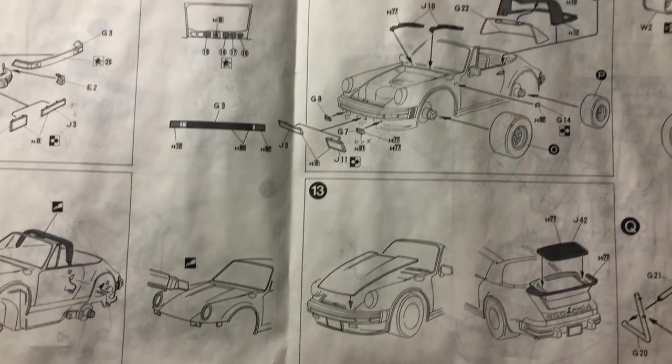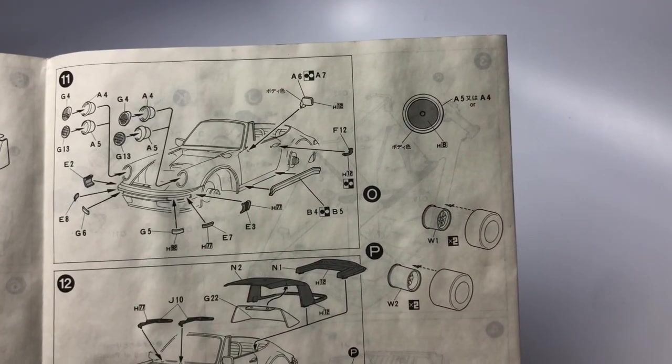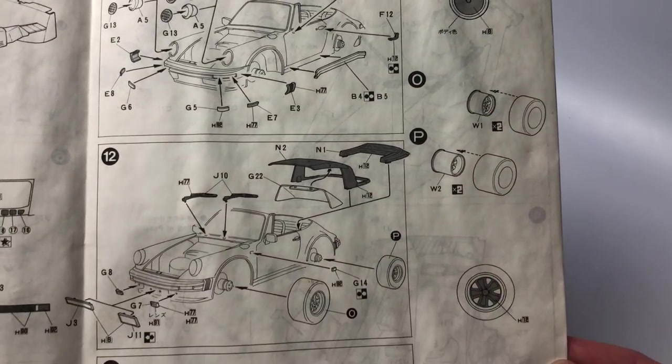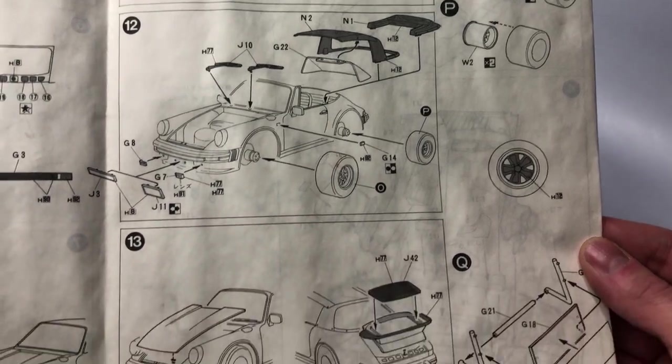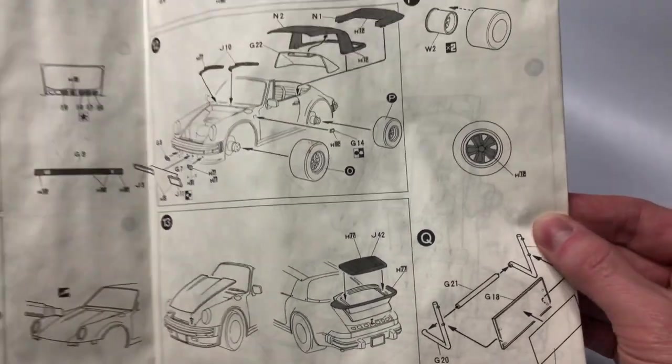Step 11 is installing more body parts and the clear parts like the headlights. Step 12, you have the option to have the convertible open or closed. In this step, we also install the tires. The final step of the instructions is step 13, where you install the front trunk lid and install the rear engine bay cover and the spoiler.